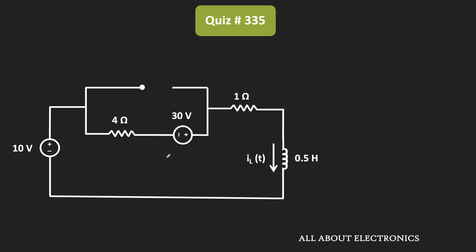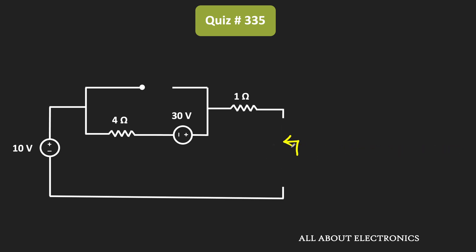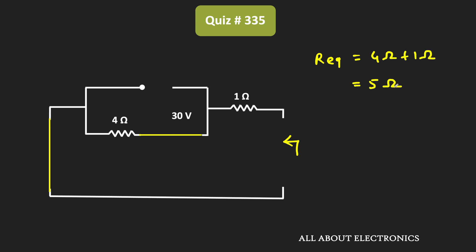R equivalent is the equivalent resistance which is seen across this inductor by considering all the independent sources in the circuit as zero. In this condition, the equivalent resistance seen across the inductor is equal to 4 Ohm plus 1 Ohm, that is equal to 5 Ohm. Therefore, the time constant τ equals L divided by R equivalent, which is equal to 0.5 henry divided by 5 Ohm, that is equal to 0.1 second.